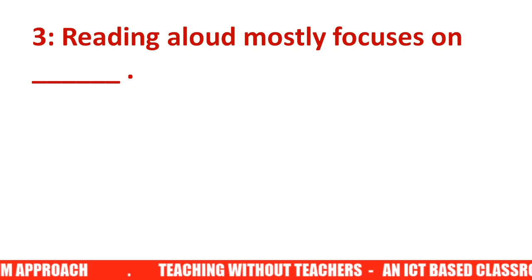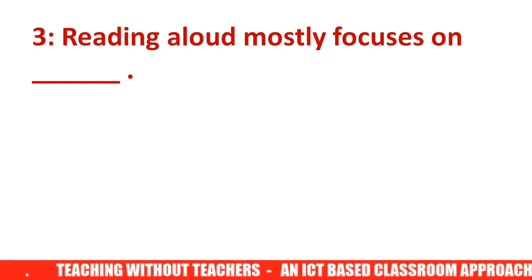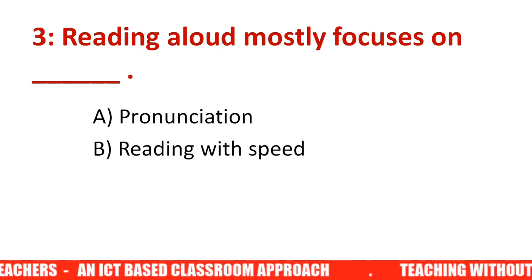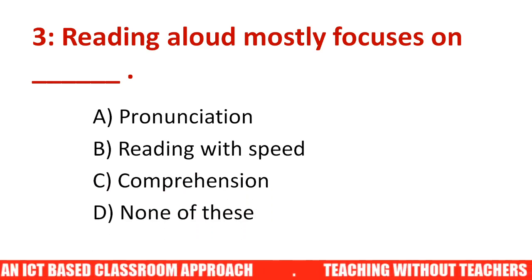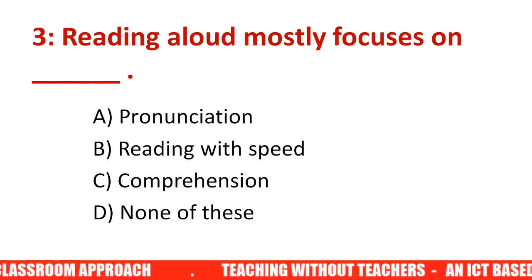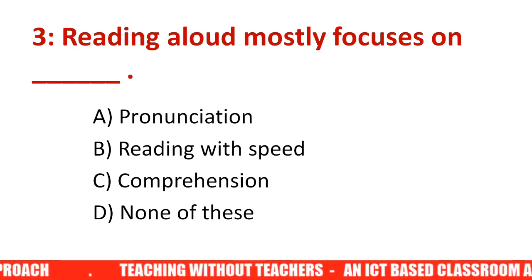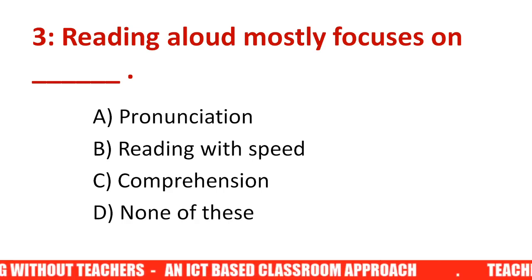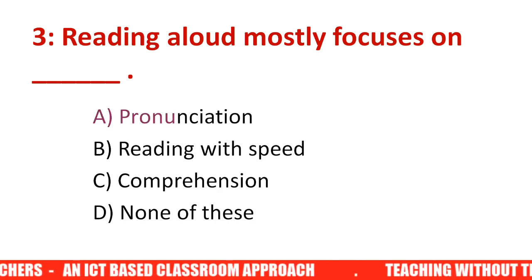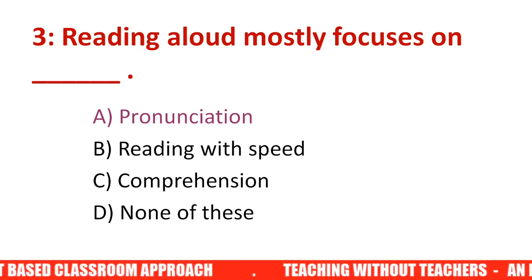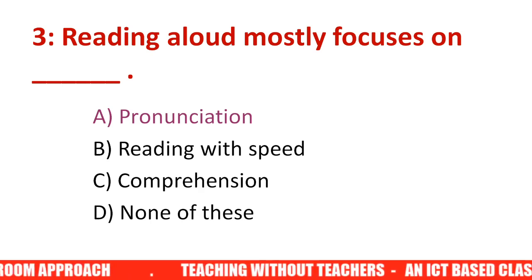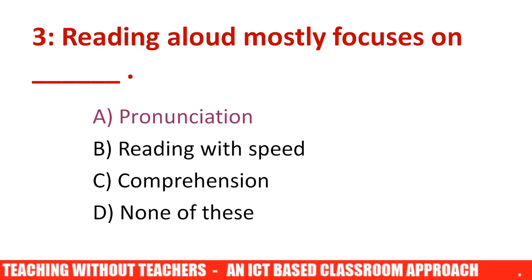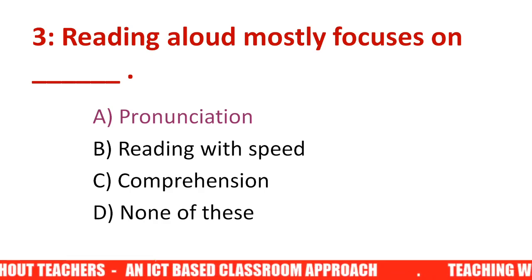Question number three: Reading aloud mostly focuses on dash. Options are: pronunciation, reading with speed, comprehension, none of these. Reading is of two types: reading aloud and silent reading. Reading aloud focuses on pronunciation — if your pronunciation is appropriate, that is the foremost objective of reading aloud. The objective of silent reading, on the other hand, is meaning and comprehension. So the answer is A — pronunciation.